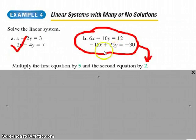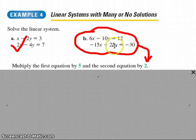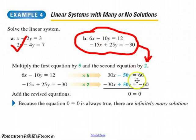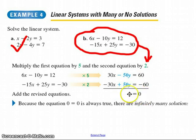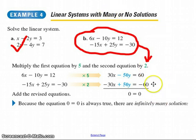Example 4b is easier to solve using linear combination. If I multiply the top row by 5 and the bottom row by 2, the y's are going to cancel — this becomes negative 50y and that becomes positive 50y. And you're going to find, as you solve that down, that 0 is equal to 0 — both the x's and y's cancel. When the two values are the same on left and right, that means you've got infinitely many solutions. It's always true that 0 equals 0. Infinitely many solutions means the two lines are equivalent — they're superimposed on each other.